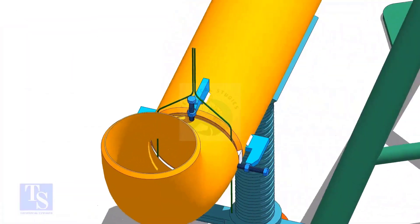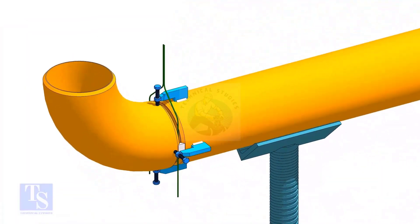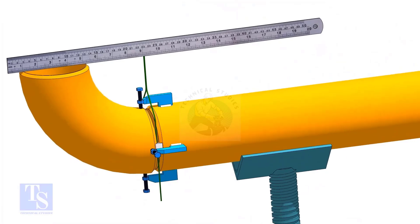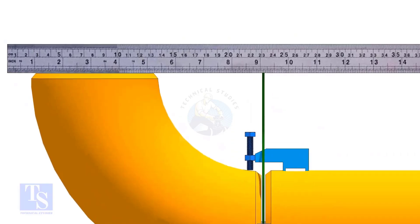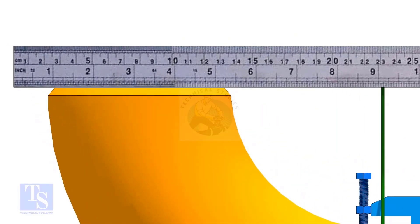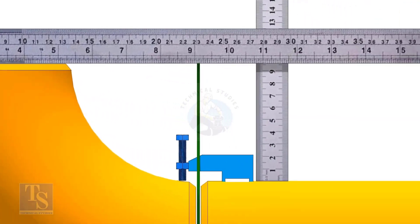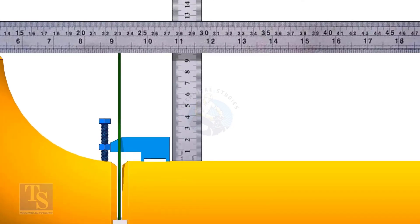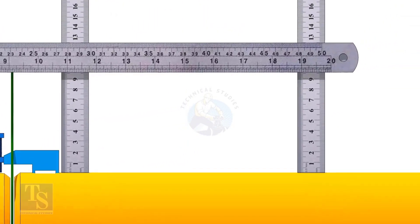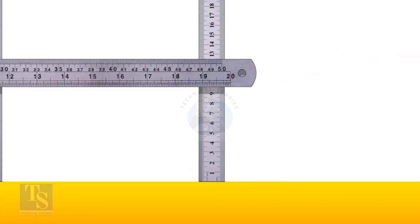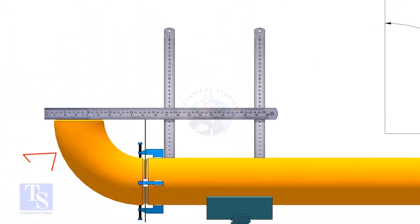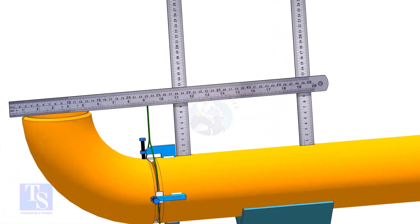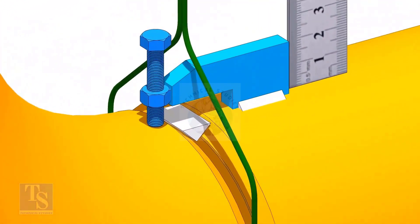Hold a large scale on the top of the elbow and check the distance as shown. If the distances are not equal, rotate the elbow to correct it. Tack weld in the top and bottom side of the joint.